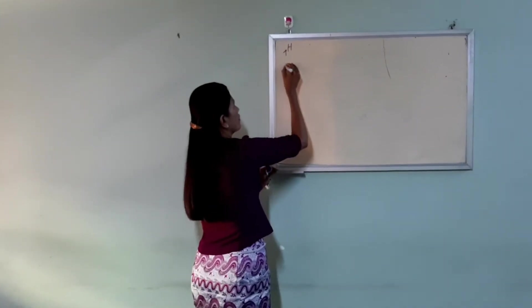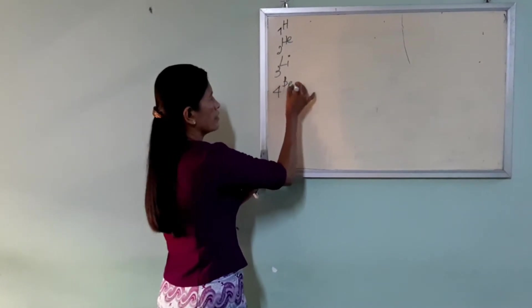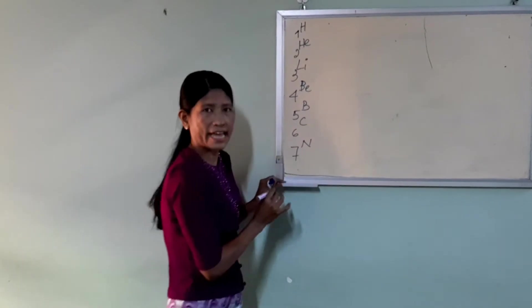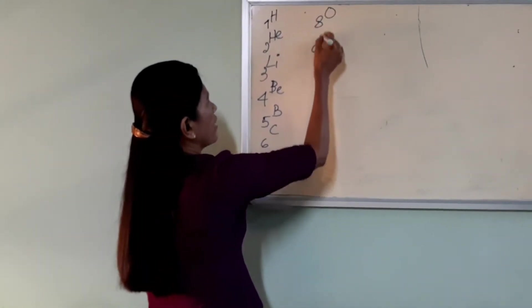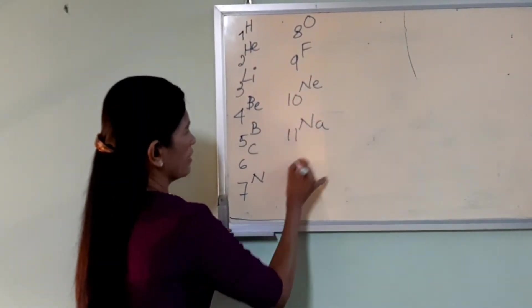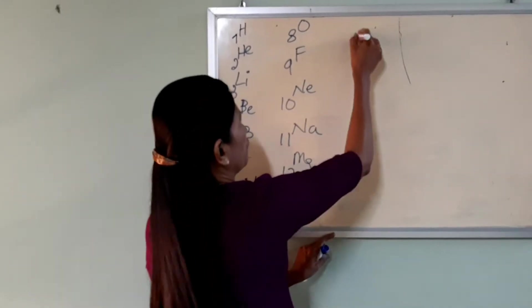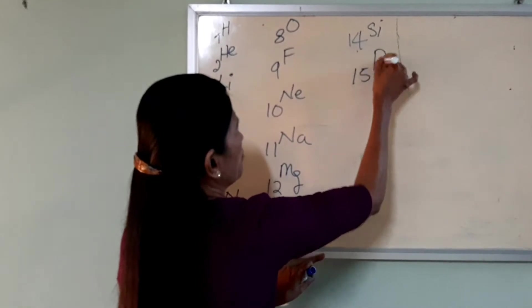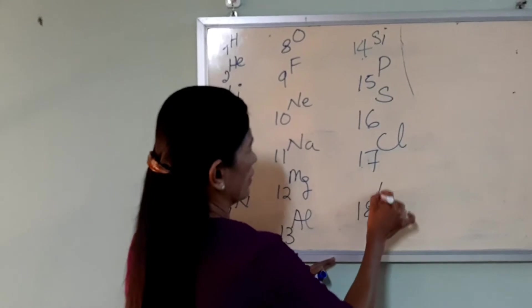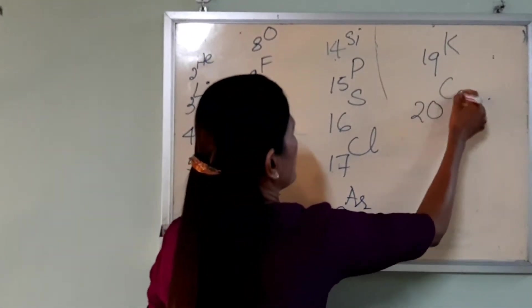Sample elements: 1H, 2He, 3Li, 4Be, 5B, 6C, 7N, 8O, 9F, 10Ne, 11Na, 12Mg, 13Al, 14Si, 15P, 16S, 17Cl, 18Ar, 19K, 20Ca.